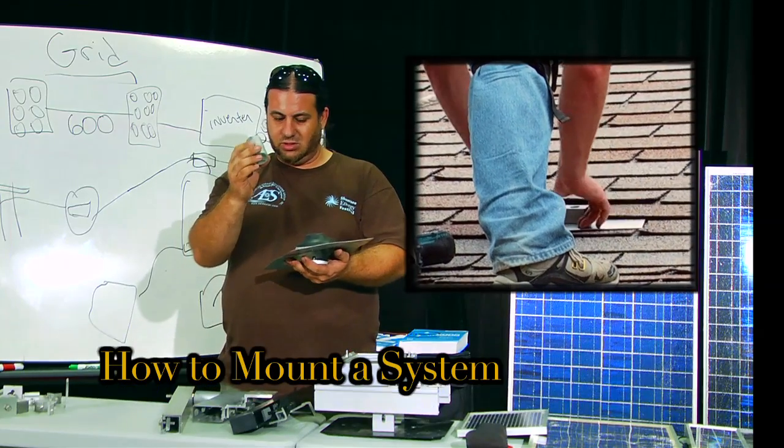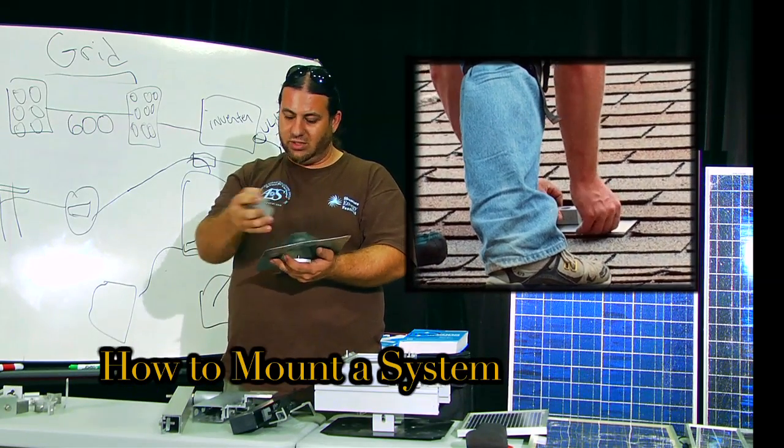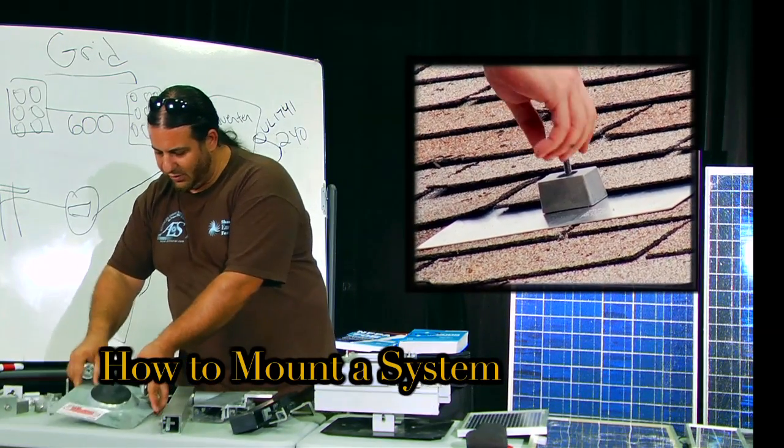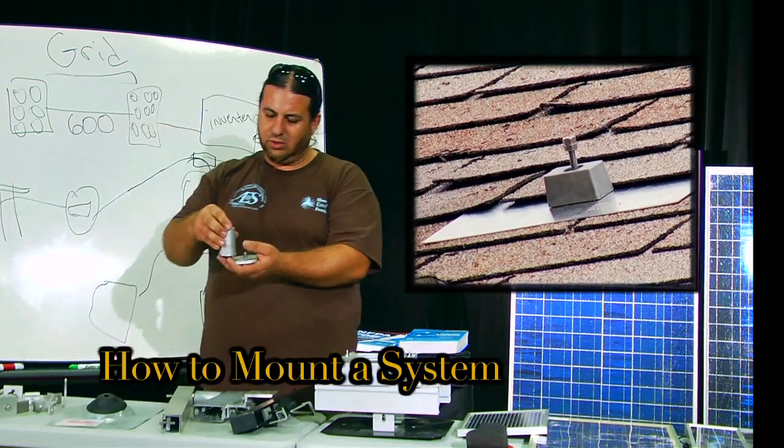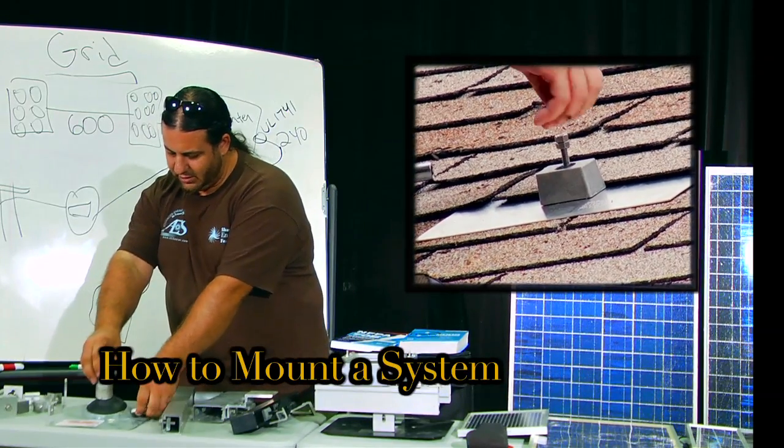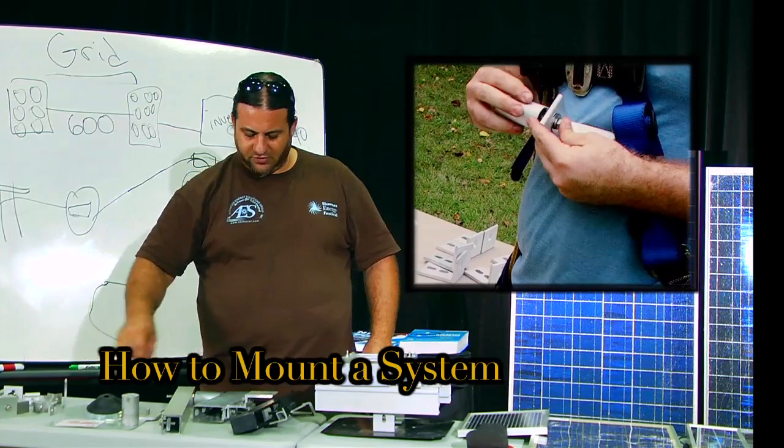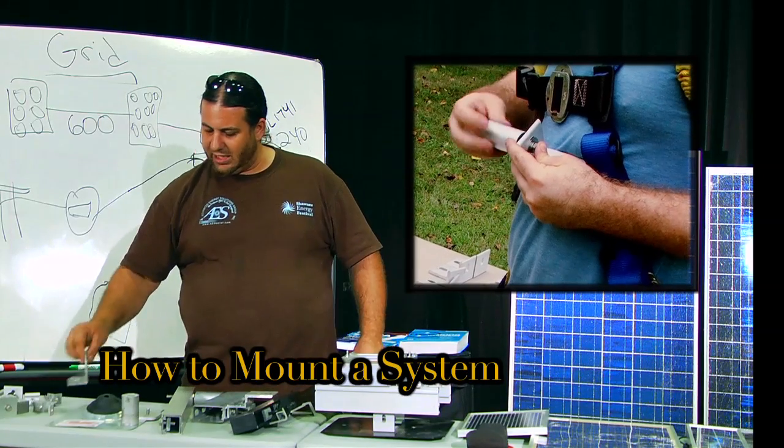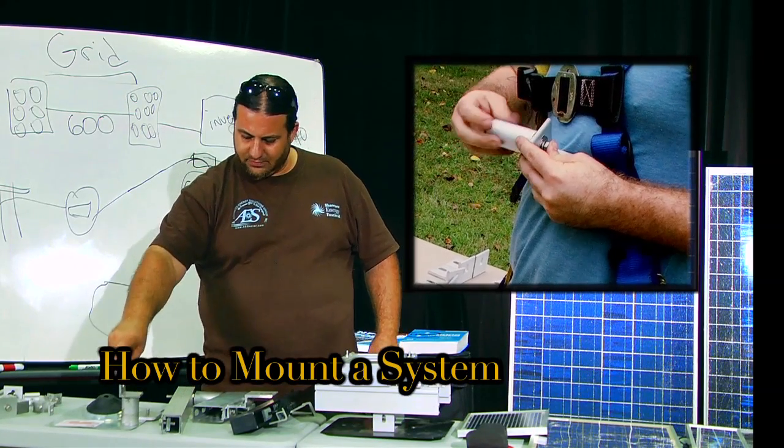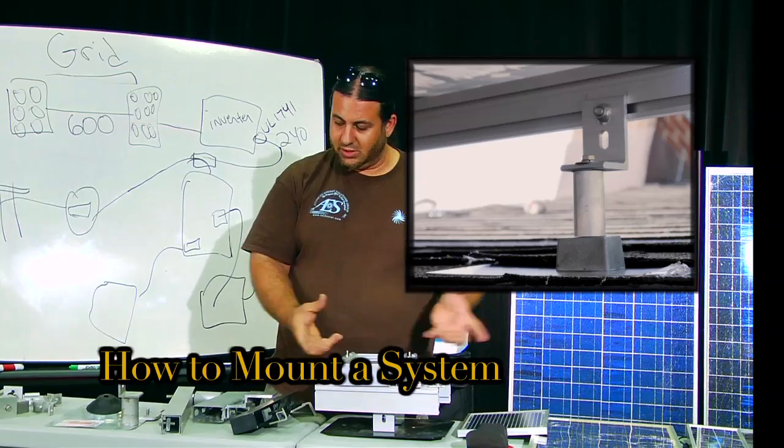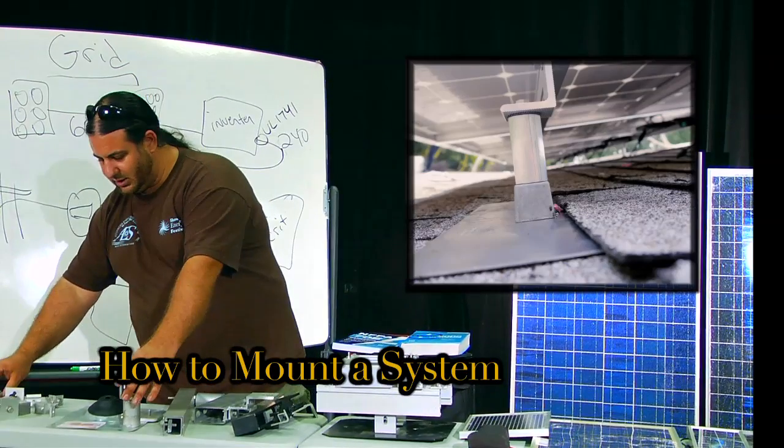Then you get the standoff and you put it through, so that would be through that flashing. And now the whole thing is flashed where you put the holes in the roof. Then you could put an L foot on the top of there and then you could assemble the rest of it. So the next step would be once you have the L foot, you put the rails.